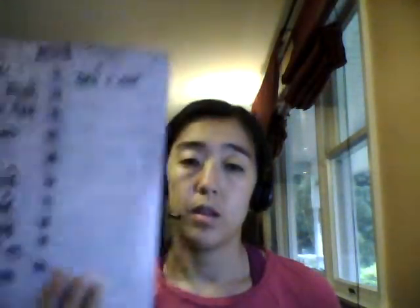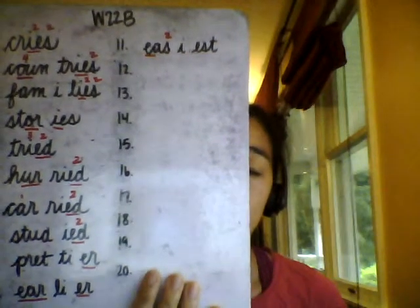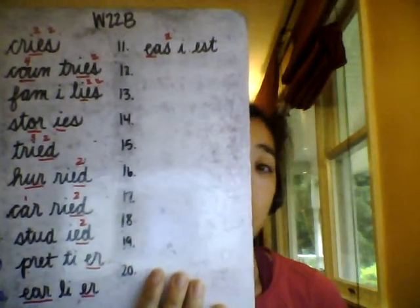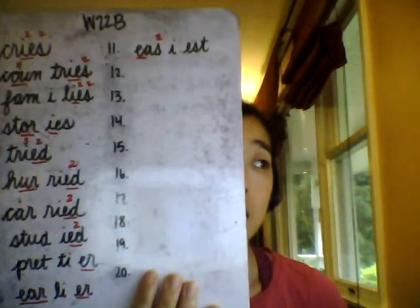Number 11: easiest. That was the easiest and simplest task ever. We're adding the EST suffix in this word, which also adds another syllable. Think to spell: E-A-S-I — remember we can use the I there because we're not at the end of the word. Easiest. Please spell out loud with me: E-A-S-I-E-S-T. Easiest.